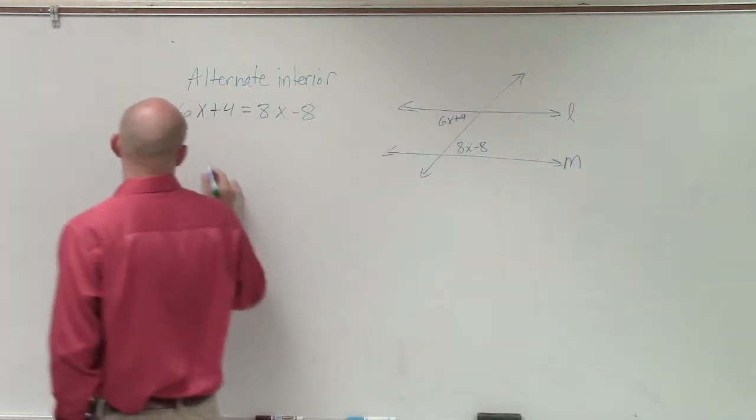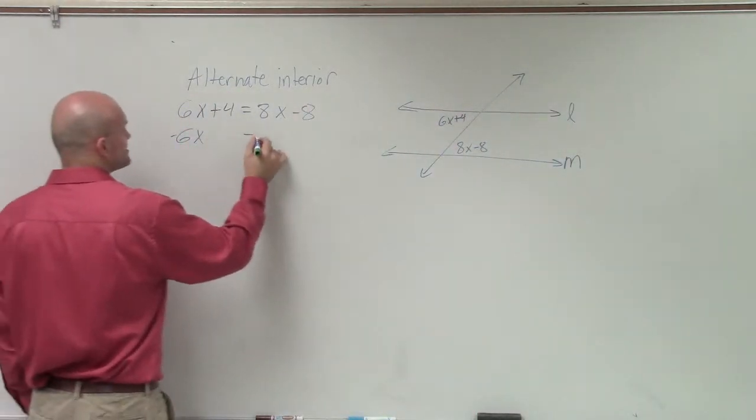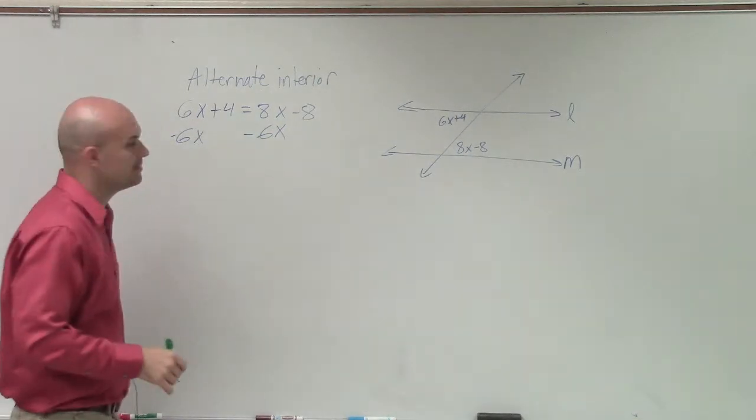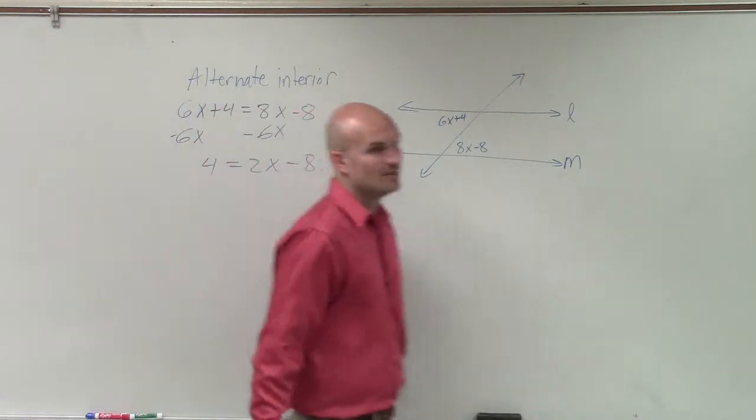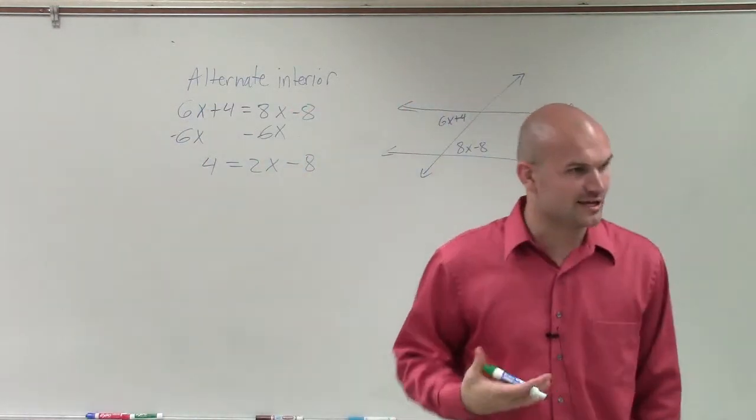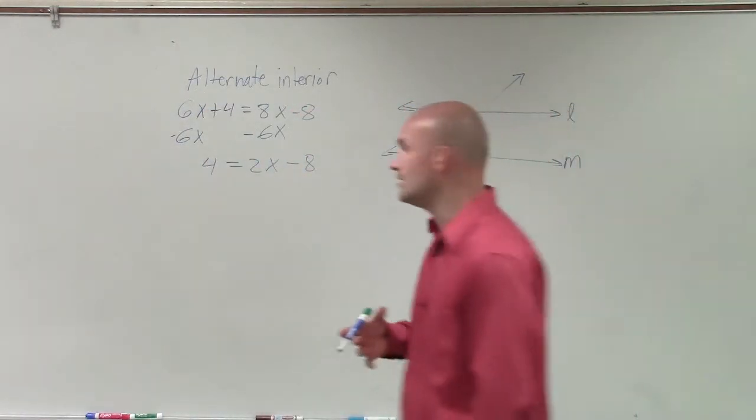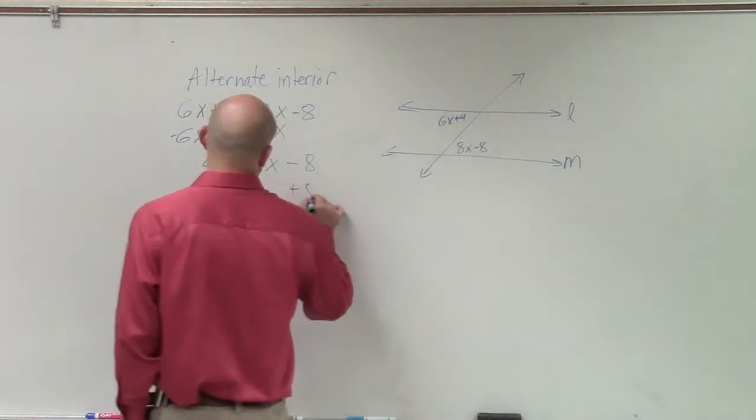So again, we get the x's on the same side. So I always like to subtract the smallest term of the x. So you have 4 equals 2x minus 8. Now, we just need to isolate the variable by using our inverse properties of operation. So I add 8.